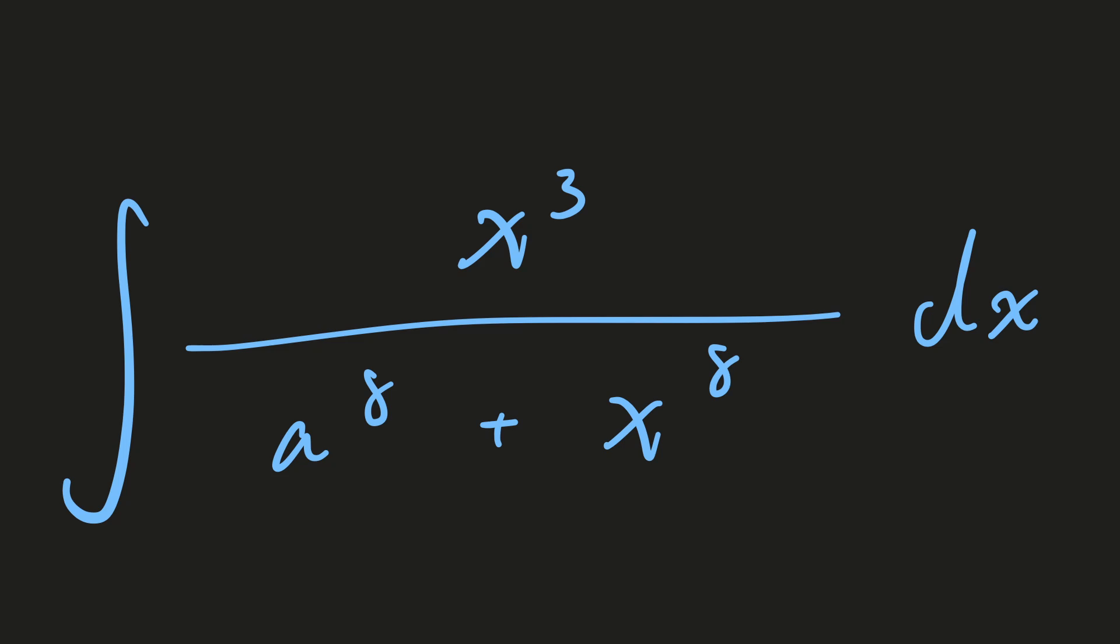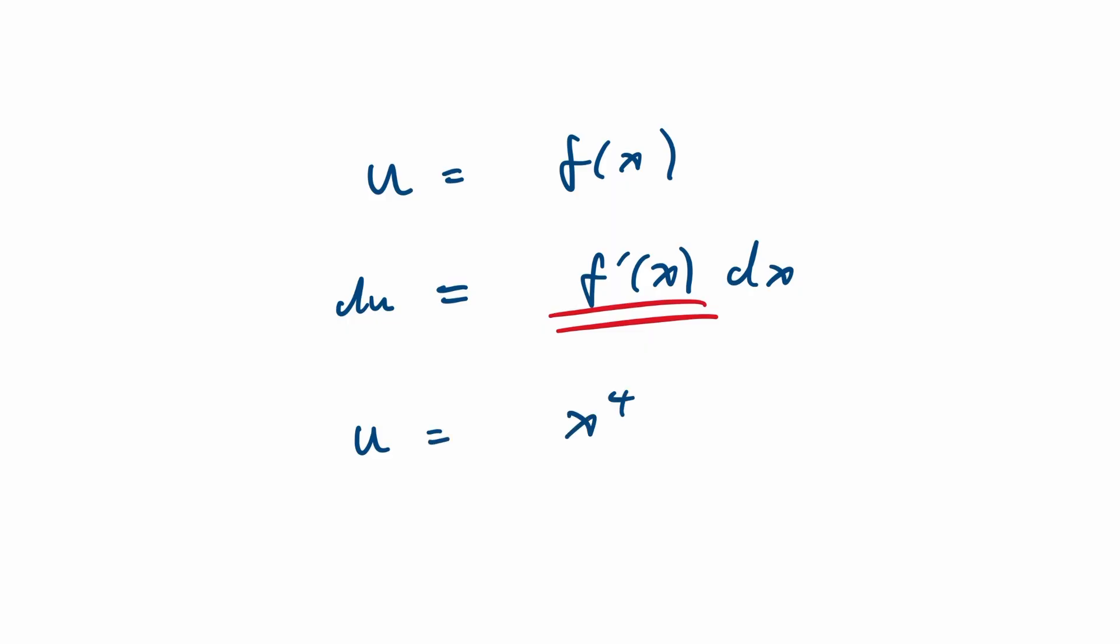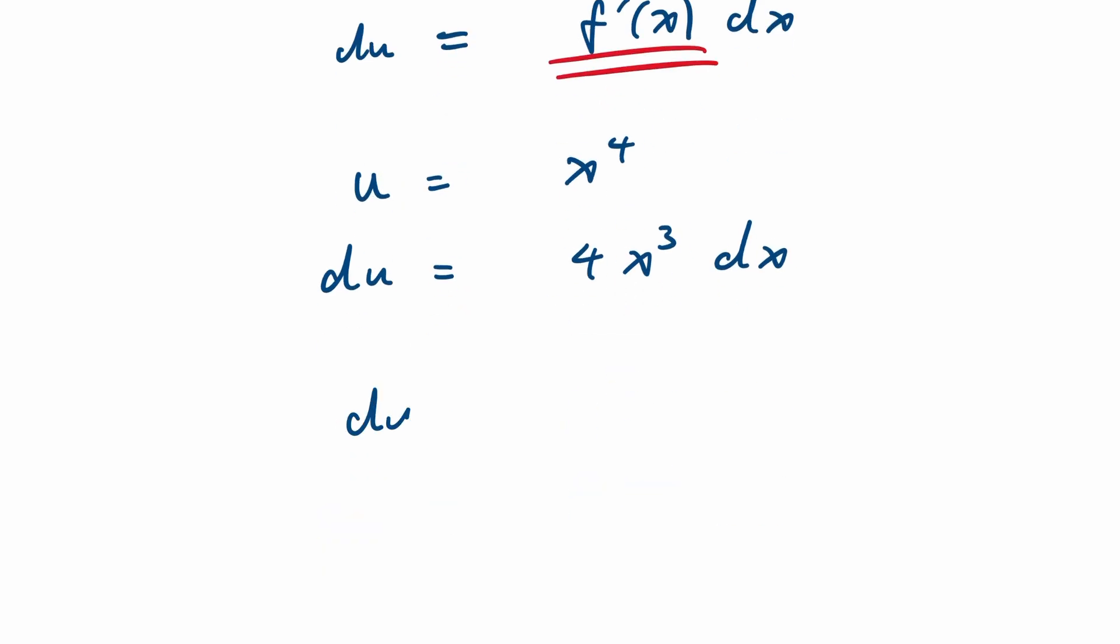Therefore, we can cancel the x cubed. This holds for any functions of u on the left hand side as well. For example, f(u) is x to the power of 4, we get f'(u) du is equal to 4x cubed.